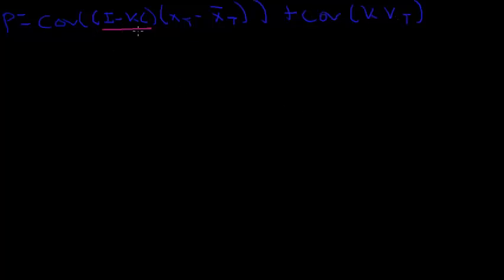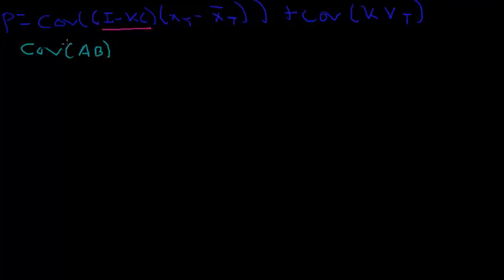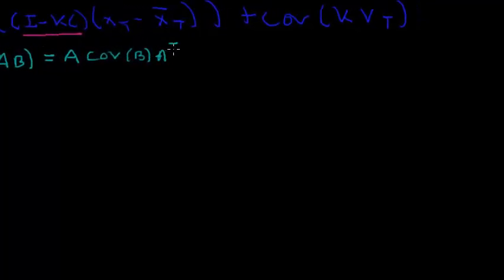I'll underline this because here we're going to talk about an important property of covariance matrices, similar to how we can split apart integrals. The covariance of A times B, if A has no bearing on B — meaning it's just constant multiplication — we can write this as A times the covariance of B times A transpose. I'm not going to prove this in this video; it's a property of covariance matrices you can look up online.